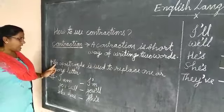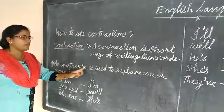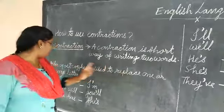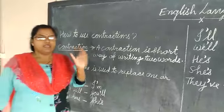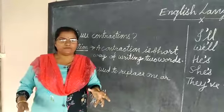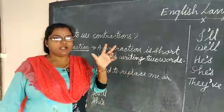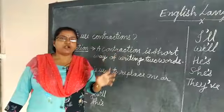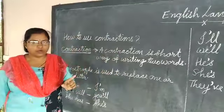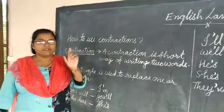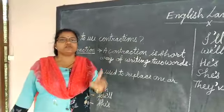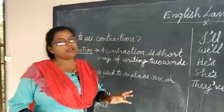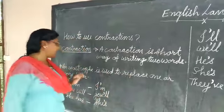Second, an apostrophe is used to replace one or more letters. In contraction form, there are two words and we shorten and make one word, and we use an apostrophe to make the short form of the word.